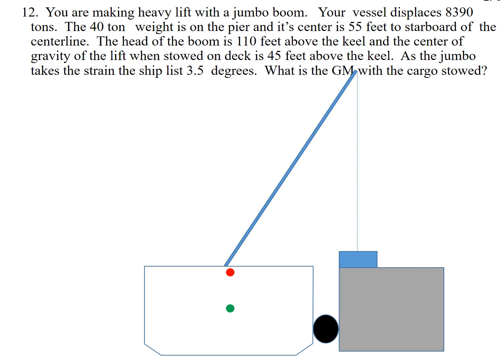And the question becomes, what is the KG going to be? Once we lift this weight from here, we're going to bring it over here, and we're going to put it at a KG of 45 feet above the keel. And so they give us a little more information that says when we take a strain on this weight, the vessel is going to incline. It's going to list to three and a half degrees, and the final question is, what's the GM of the cargo stowed?